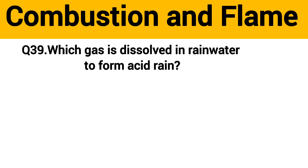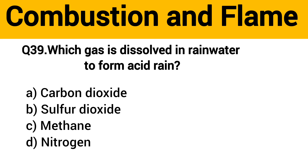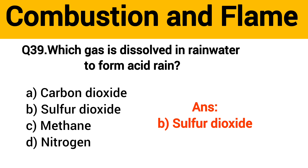Question number 39: Which gas is dissolved in rain water to form acid rain? The right answer is option B: Sulfur dioxide.